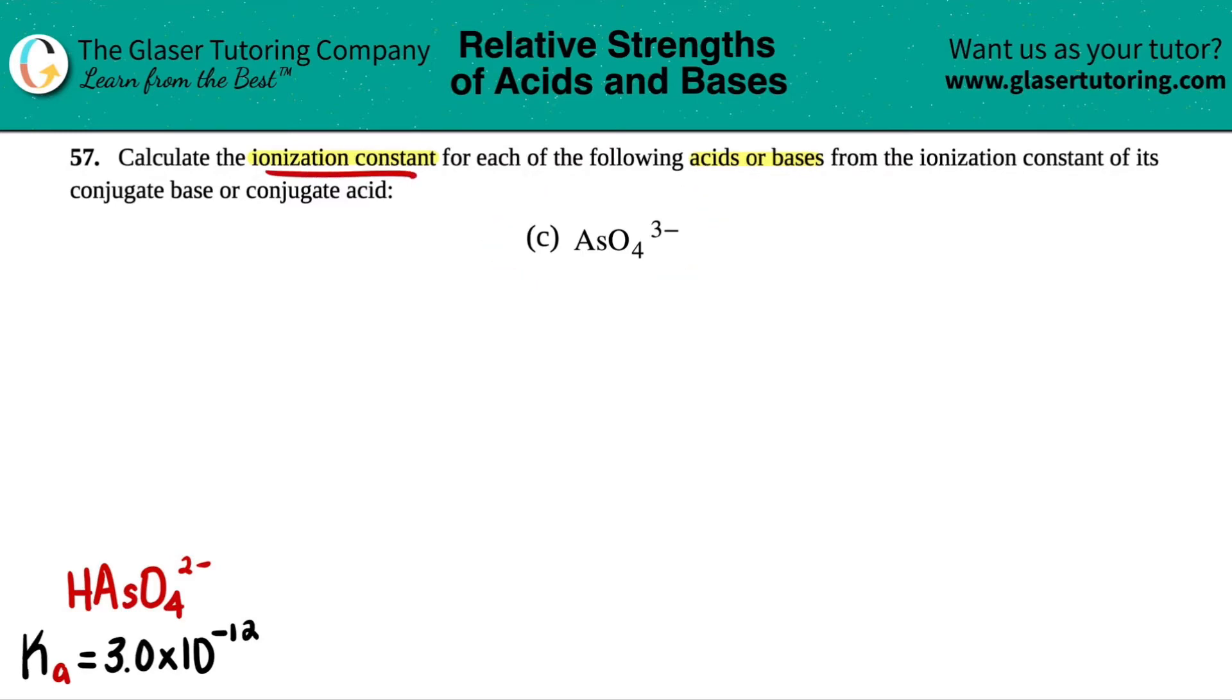So in this case, we have to find the ionization constant of AsO4 3-. Now the first thing is, what is this? Is this an acid or a base?